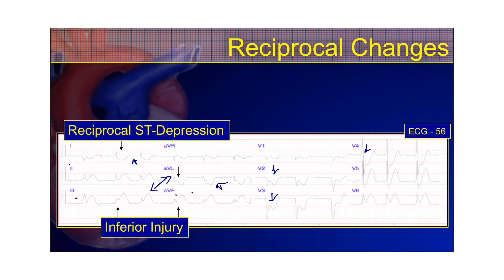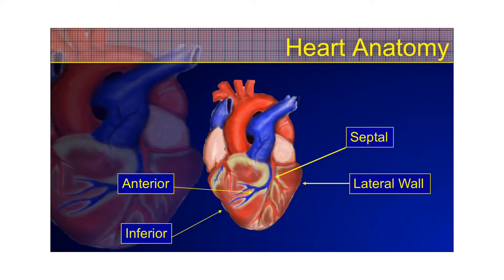The right coronary artery provides blood flow to the posterior descending artery in 85% of people. So if you were to have an occlusion of the RCA, as you do with your typical inferior wall MI, there's a good chance it will involve the posterior blood flow and show up as a posterior wall MI in conjunction with the inferior wall MI. The inferior wall was infarcted because of this right coronary artery occlusion, and the posterior wall for the same reason because it was a dominant RCA that was occluded.